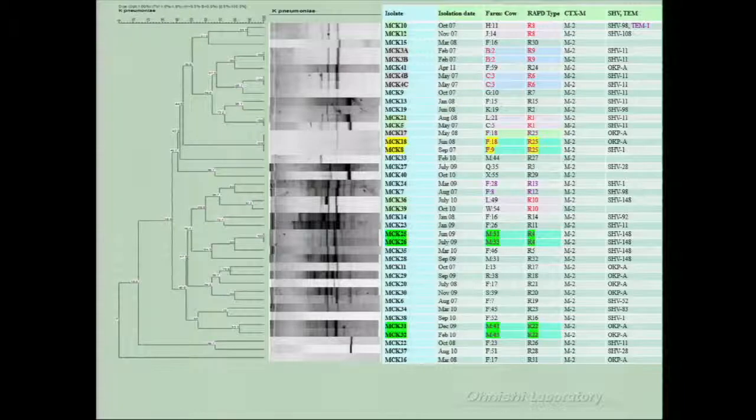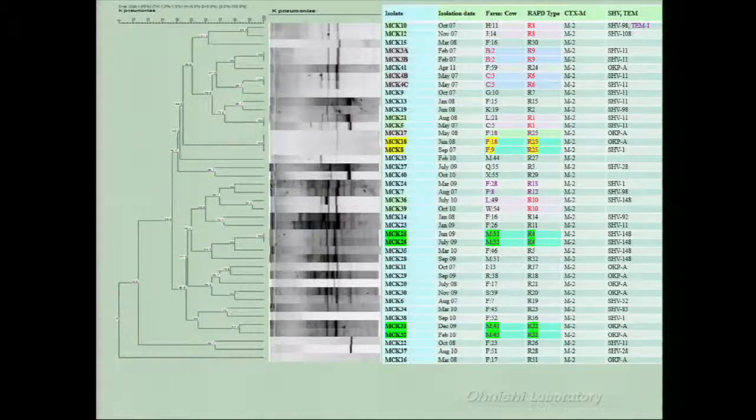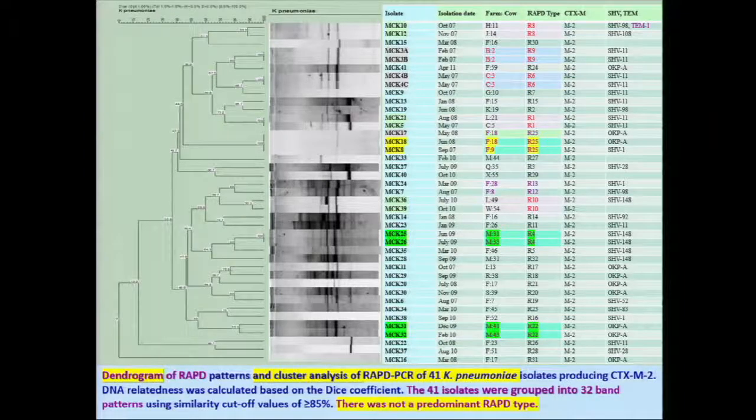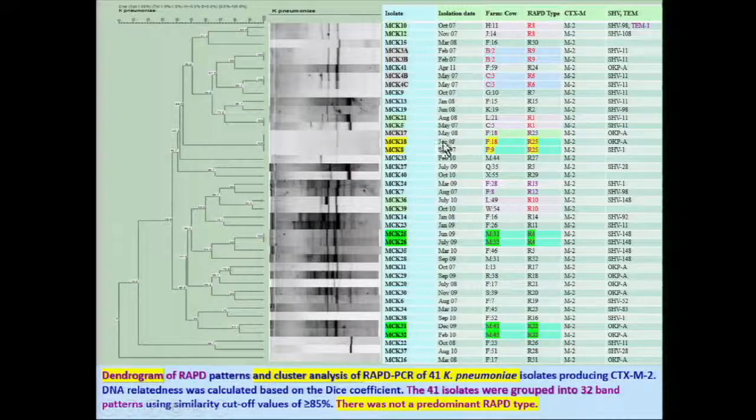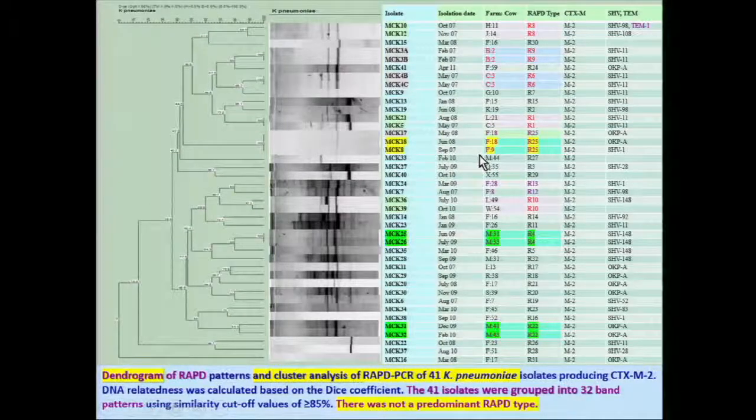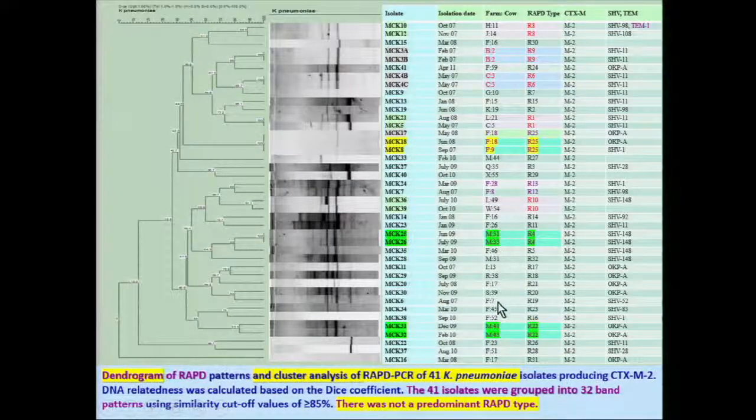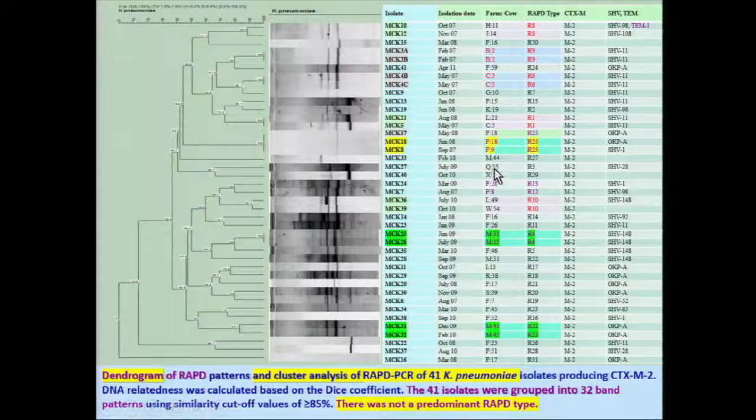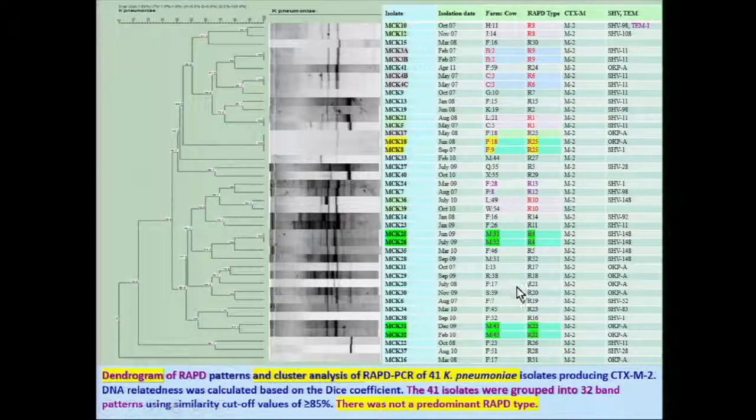This is a dendrogram and cluster analysis of RAPD-PCR for K. pneumoniae. There was not a predominant RAPD type. However, 2 isolates each from 2 different cows on the same farm showed closely related RAPD types.